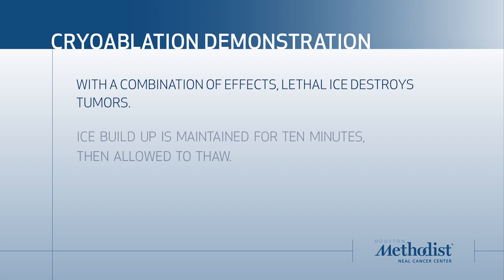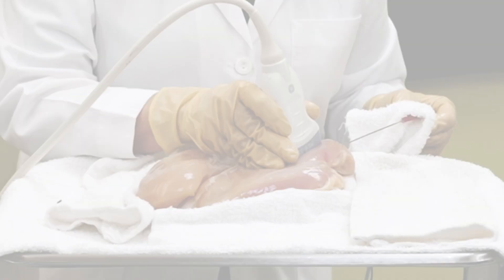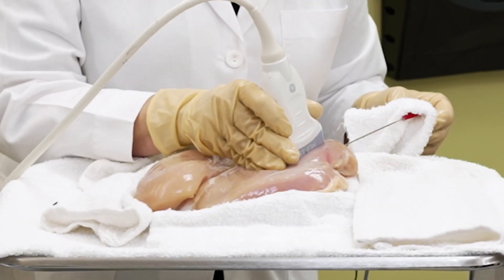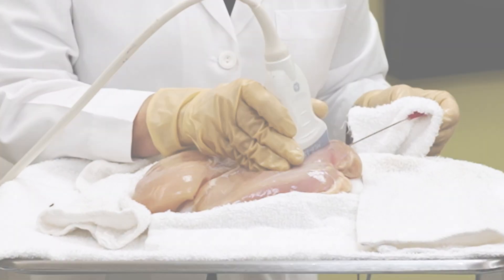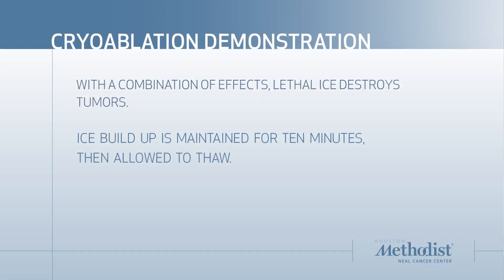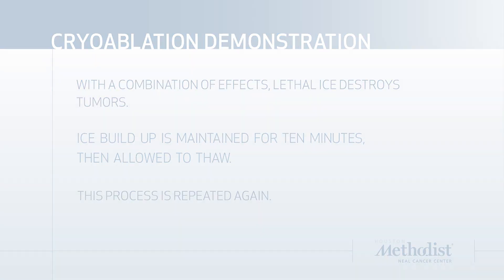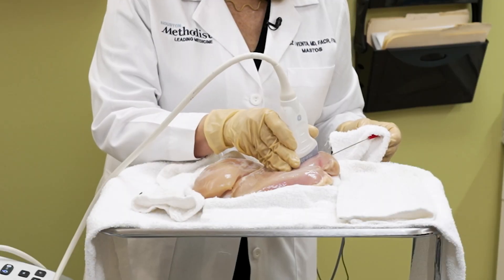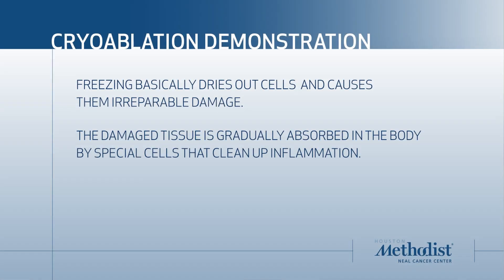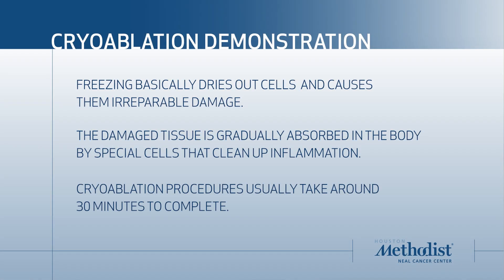Typically, the physician would maintain the ice buildup for approximately 10 minutes before allowing it to thaw. Once the initial ice ball has thawed, the process is repeated, freezing it again for another 10 minutes, followed by thawing. This completes the cryoablation procedure. The process of freezing and thawing of the phantom during a cryoablation procedure usually takes around 30 minutes.